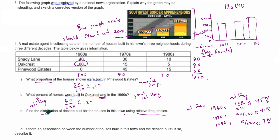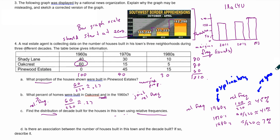So that is the distribution of relative frequencies across the decades. Now, is there an association between the number of houses built in this town and the decade built? If the decade is our explanatory variable and the number of houses built is our response variable, then yes — there does appear to be an association, because in the earlier decades there were larger percentages of houses built compared to the later decades like the 1980s.